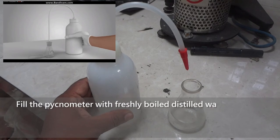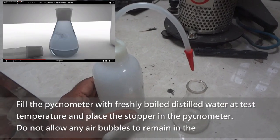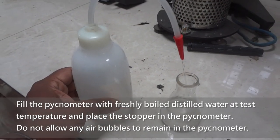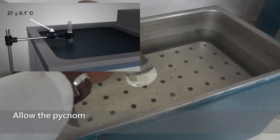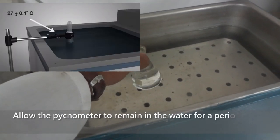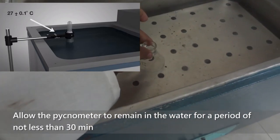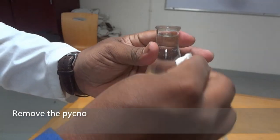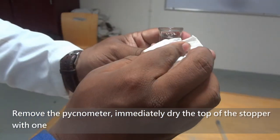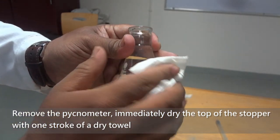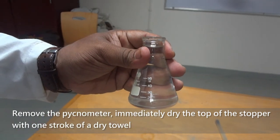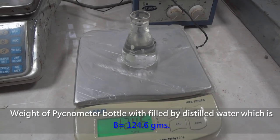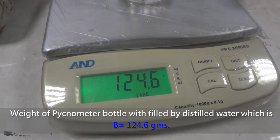Now the bottle is filled with fresh distilled water, which has specific gravity of 1. Place the pycnometer in water bath for 30 minutes at temperature of 27 degrees plus or minus 0.1 degrees Celsius. Now weigh the pycnometer bottle filled with distilled water, which is B. B is 124.6 grams.